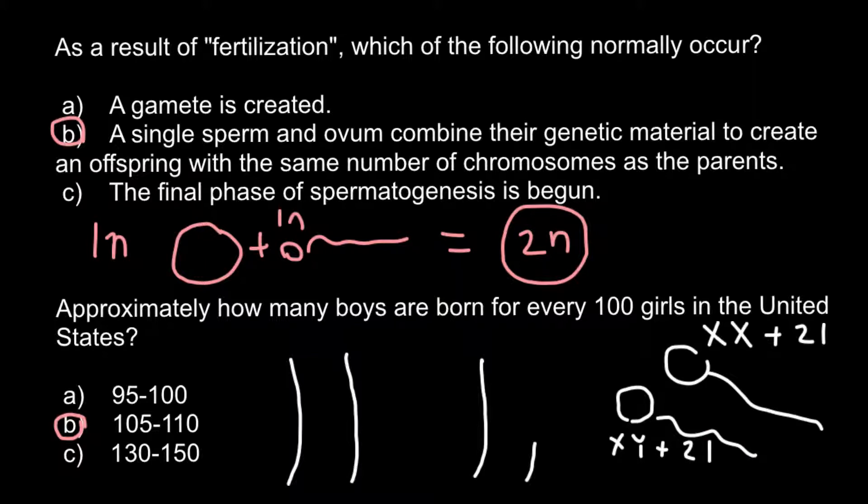But by the age of 18 to 20, the sex ratio becomes 1 to 1 because males have a higher mortality rate due to a number of different reasons, including that males usually take more risky actions.